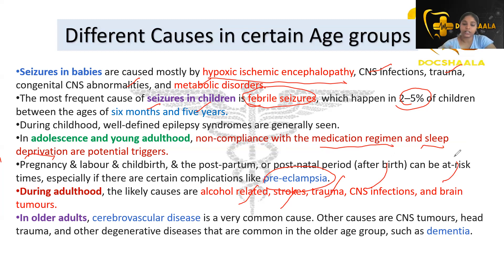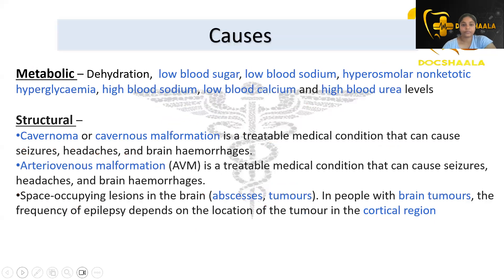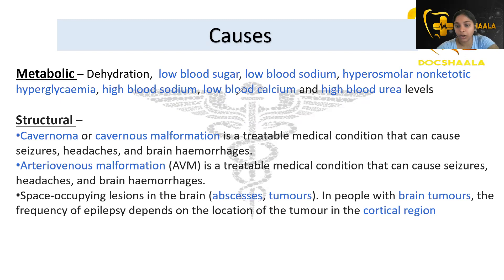In older adults — geriatrics — cerebrovascular disease is the most common cause. Other causes in the older age group include CNS tumors, head trauma, and neurodegenerative diseases such as dementia. Metabolic causes include dehydration, low blood sugar, low blood sodium, hyperosmolar non-ketotic hyperglycemia, high blood sodium, low blood calcium, and high blood urea levels.